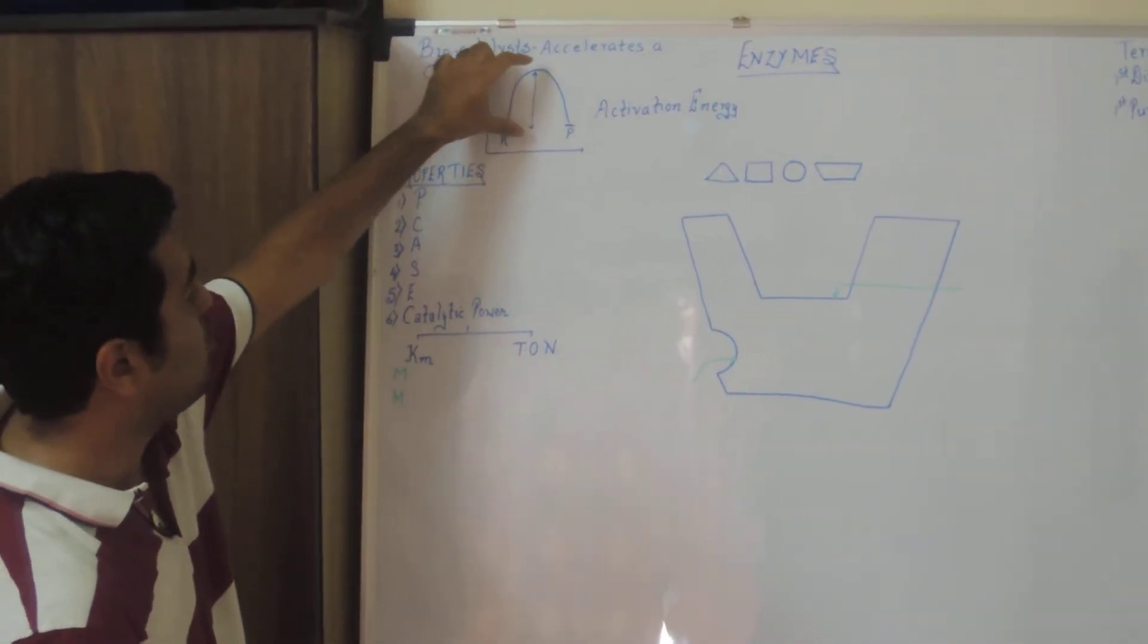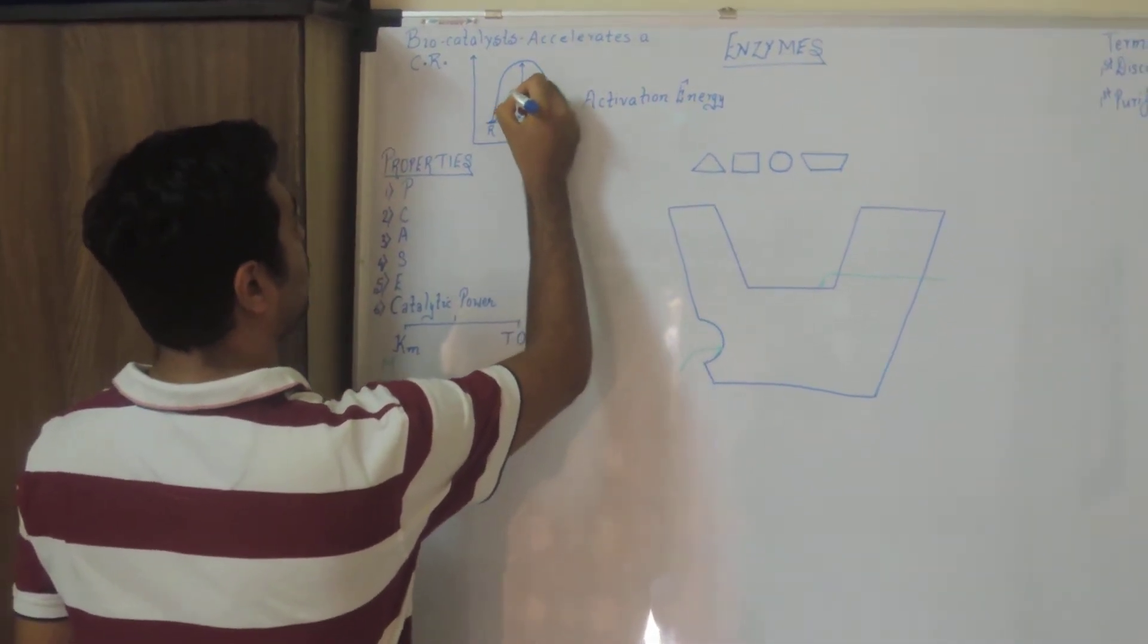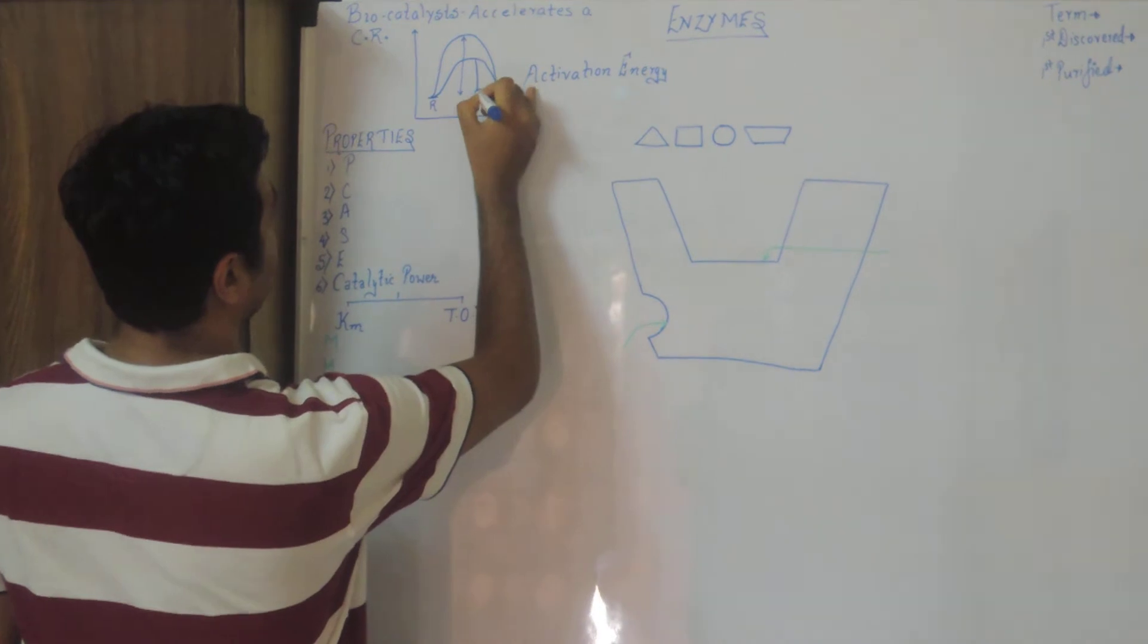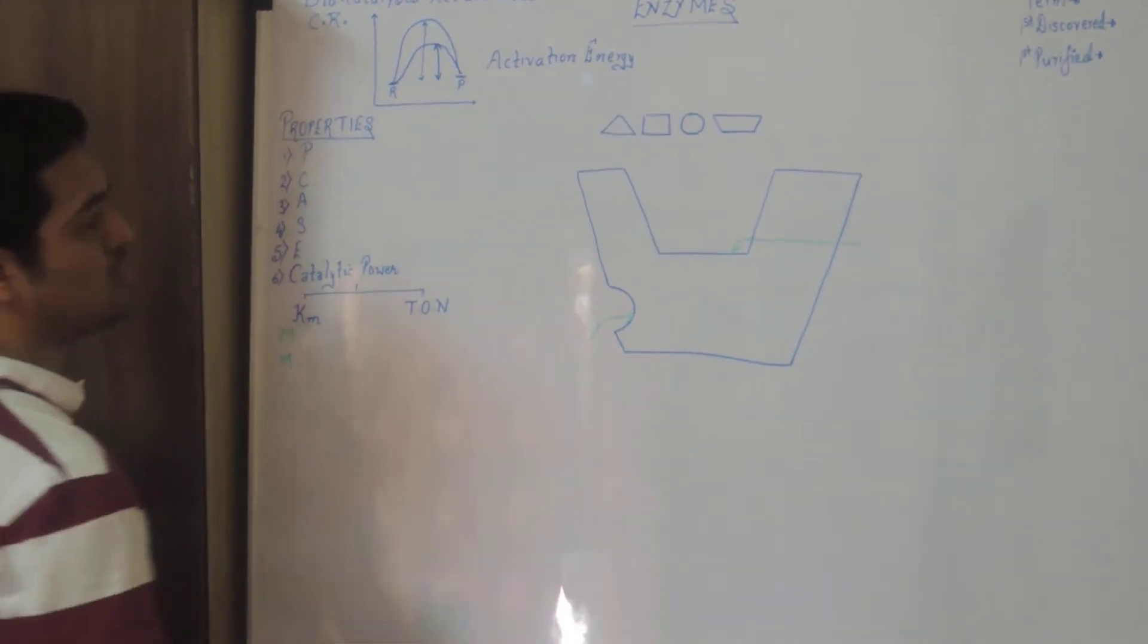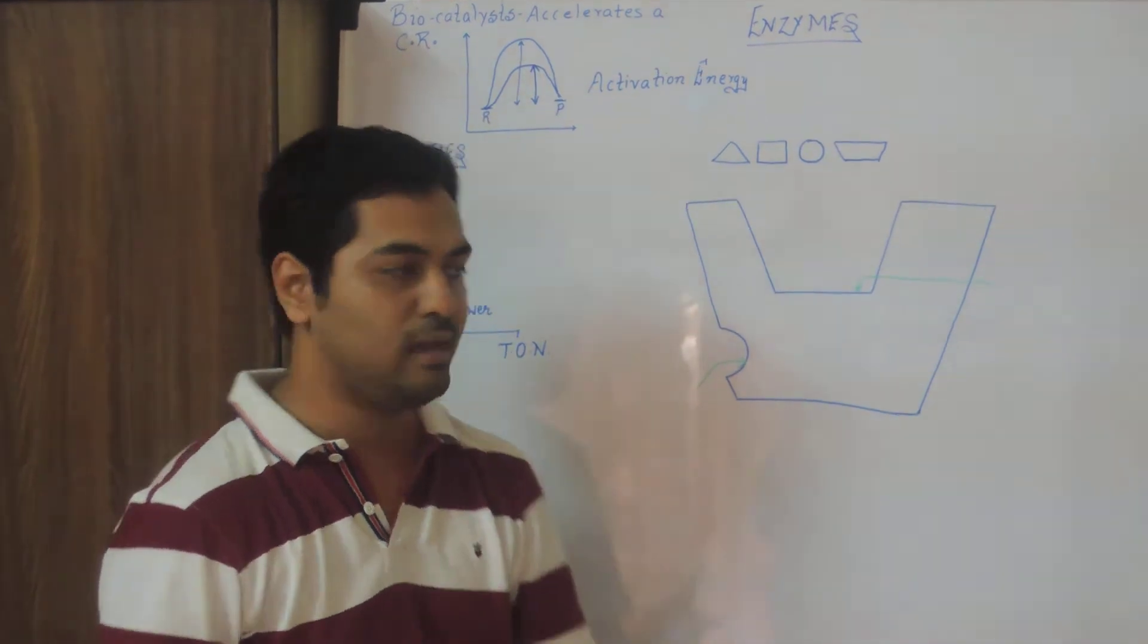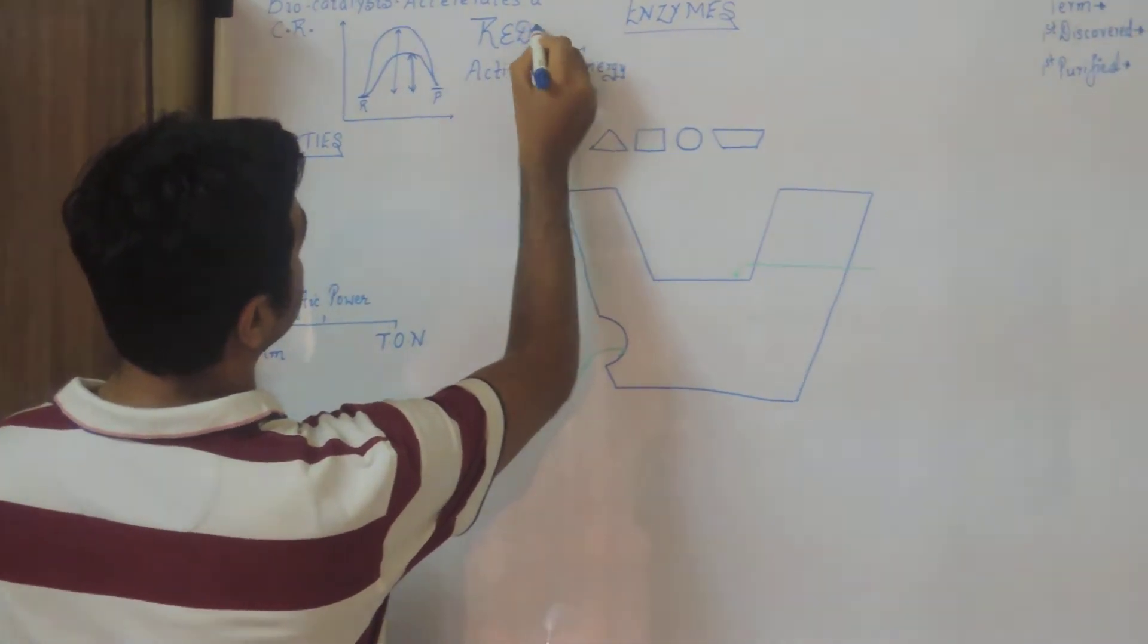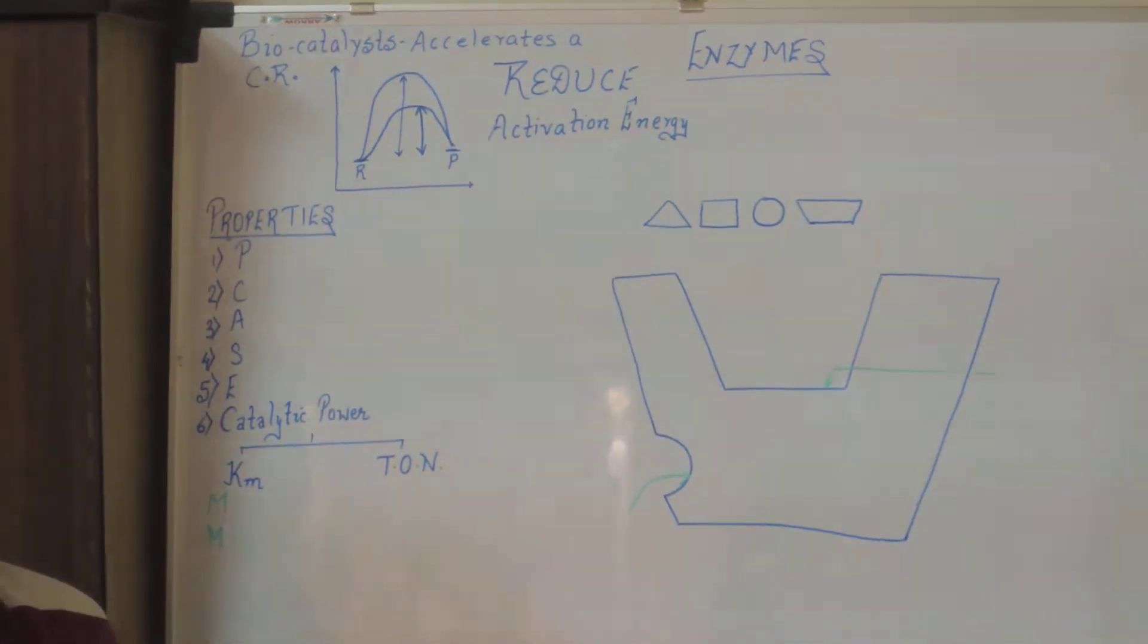So if this much amount of energy is required, in presence of enzyme, the reactant will be converted into a product with a very much lower amount of activation energy. So you conclude that enzymes always reduce the activation energy for a particular chemical reaction.